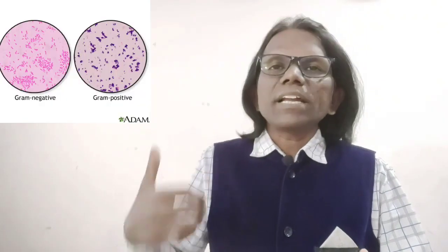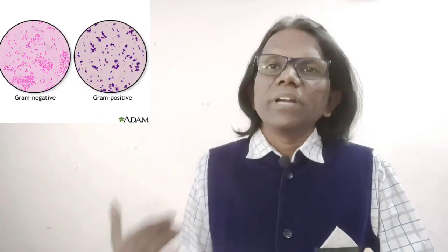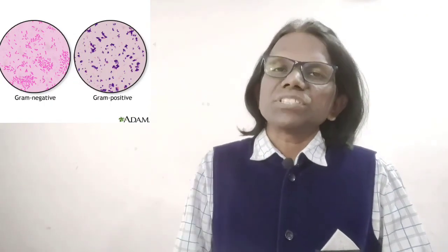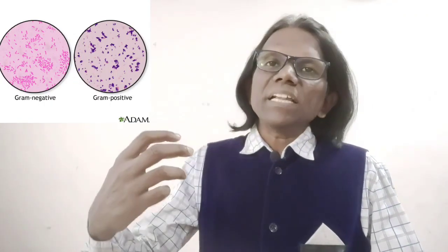That is why gram-positive bacteria have a thicker peptidoglycan membrane layer, whereas gram-negative bacteria have a thin peptidoglycan layer. During the staining process, gram-positive bacteria retain the primary stain, whereas gram-negative bacteria lose the primary stain crystal violet and retain the counter stain.